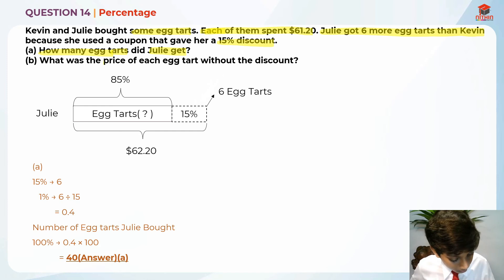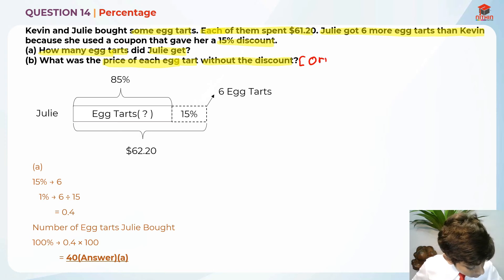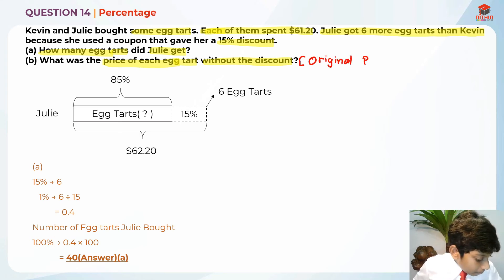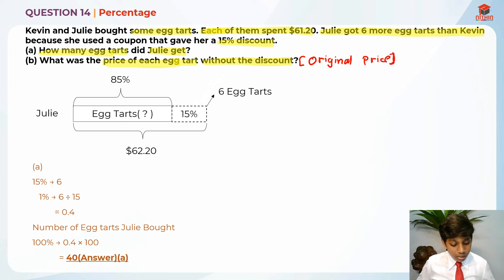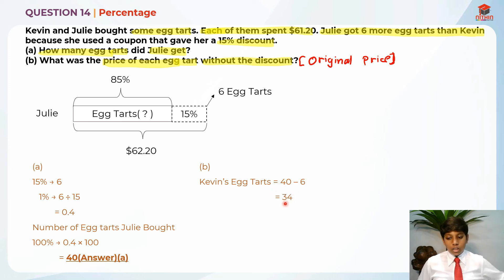What was the price of each egg tart without the discount? They're asking us to find the original price. So I'm going to use Kevin's egg tarts now. Kevin has 6 less than Julie, so I'm going to take 40 minus 6 first. Kevin's egg tarts is 40 minus 6, which is 34.